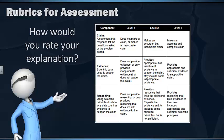So let's look at a general rubric and how you would rate your explanation that you just wrote. There's lots of different rubrics that you can use. This is a very general, generic rubric. So would you be a level 1, does not make a claim or makes an inaccurate claim? Or would you be a 3, makes an accurate and complete claim?